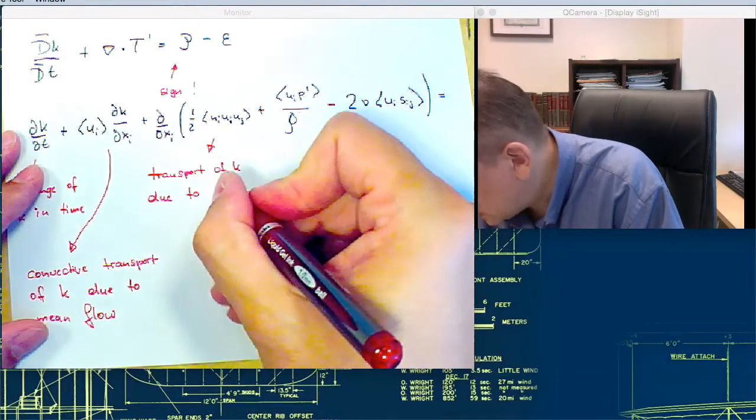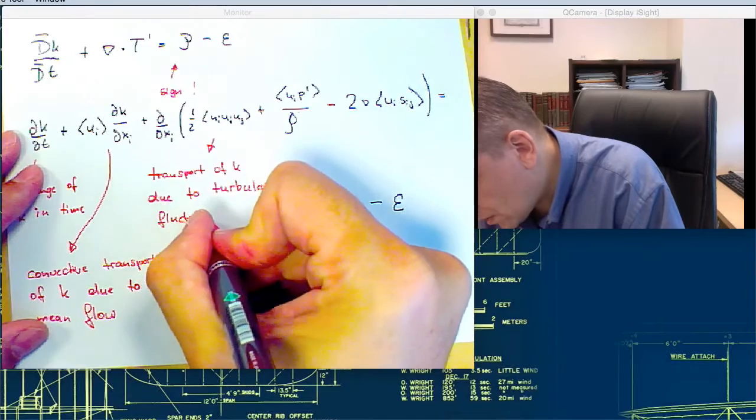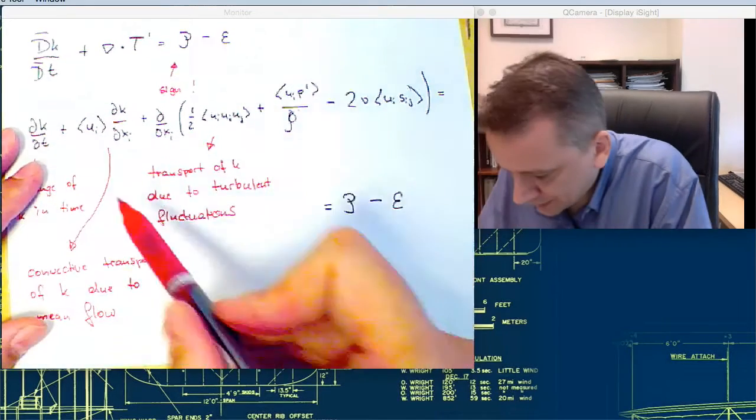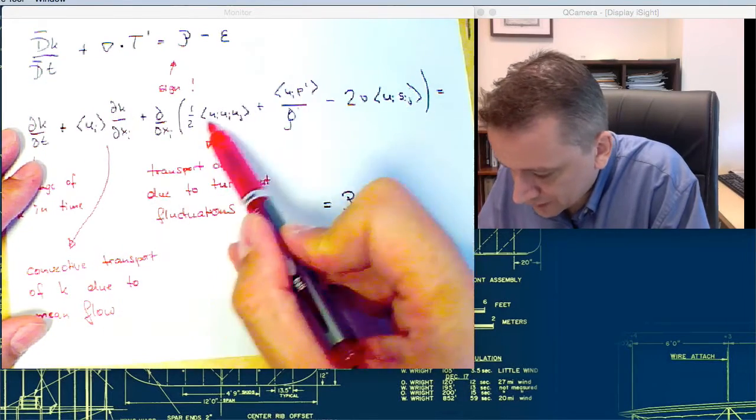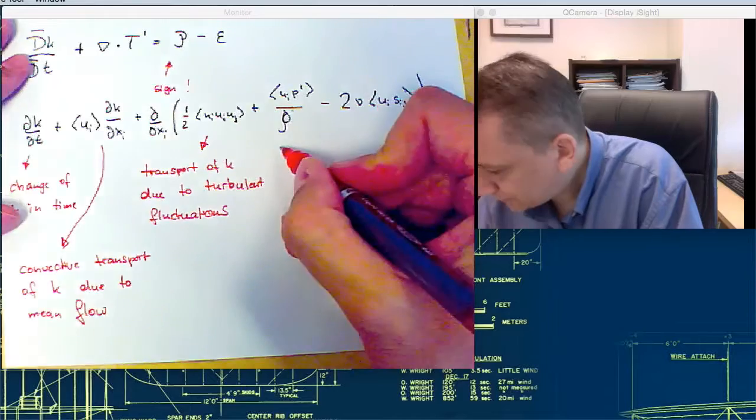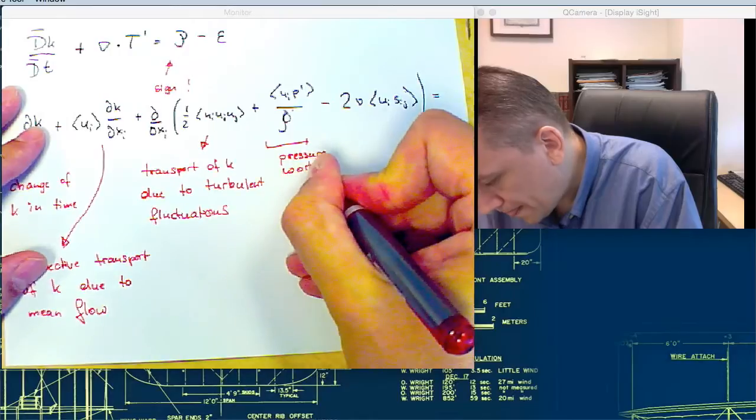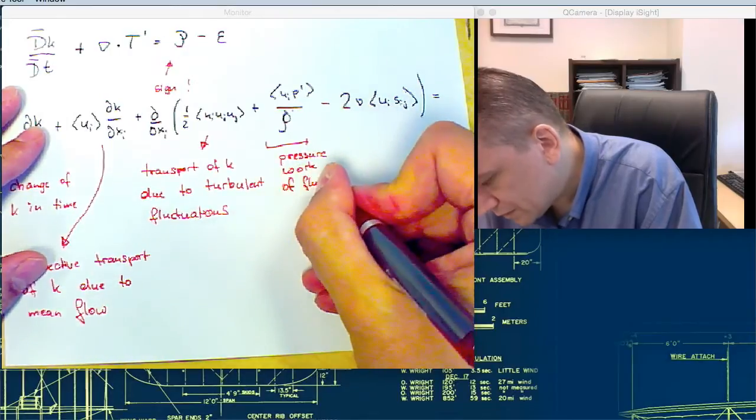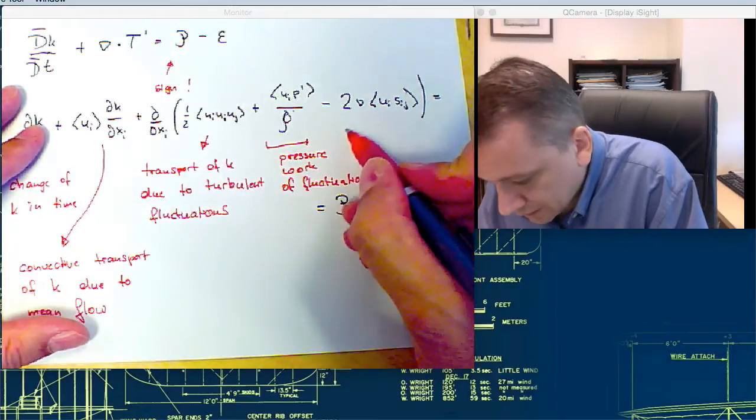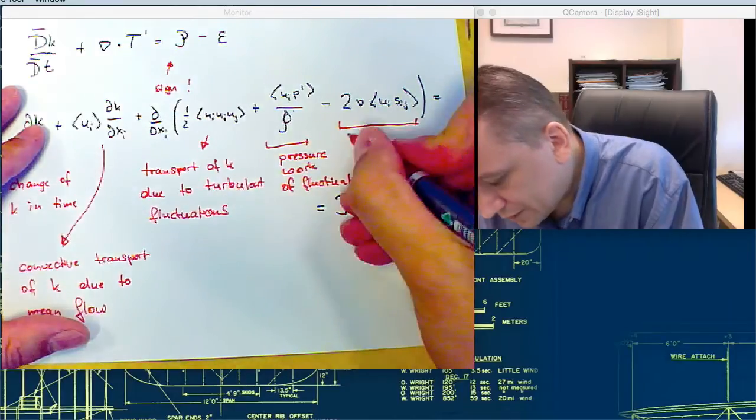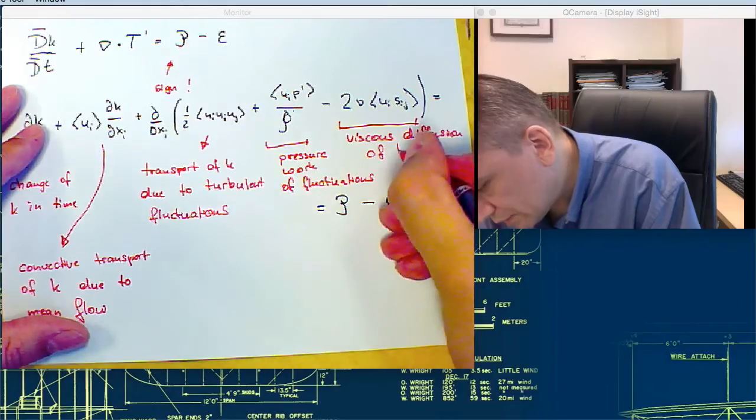This one is transport due to turbulent fluctuations. So essentially, it's the same if you write out here k as uj uj. This one is a convective term, this one is essentially also a convective term like that. Here, this one's again the pressure work of the fluctuations. This one is the diffusion, the viscous diffusion of the turbulent kinetic energy.